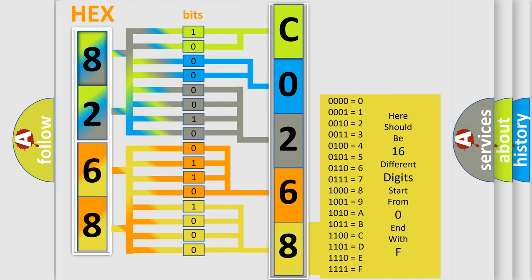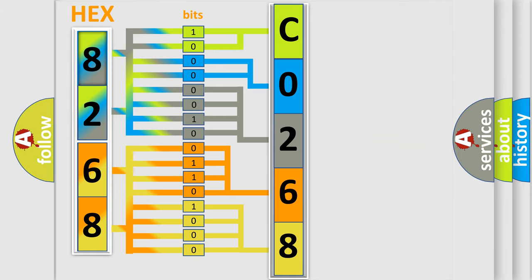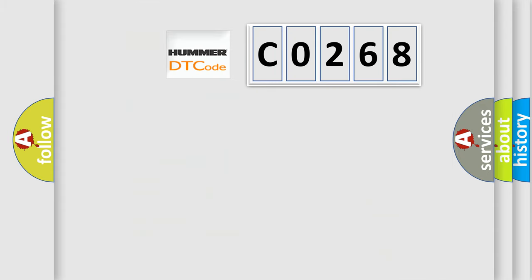We now know in what way the diagnostic tool translates the received information into a more comprehensible format. The number itself does not make sense to us if we cannot assign information about what it actually expresses. So, what does the diagnostic trouble code C0268 interpret specifically for car manufacturers?